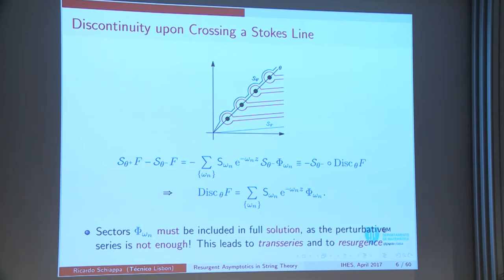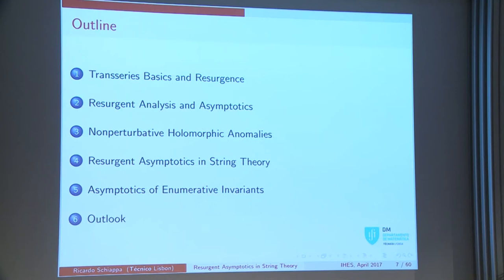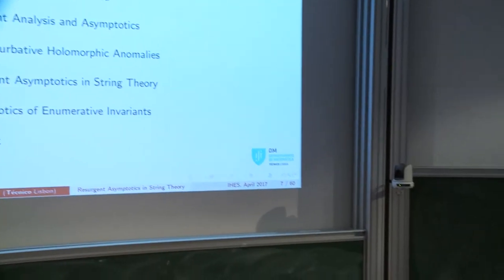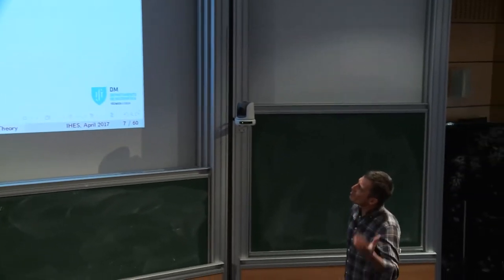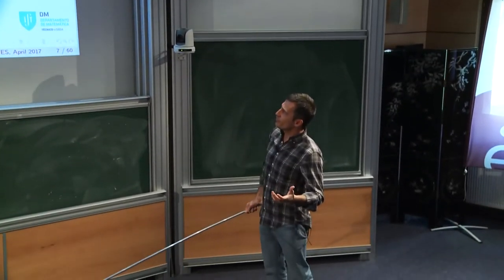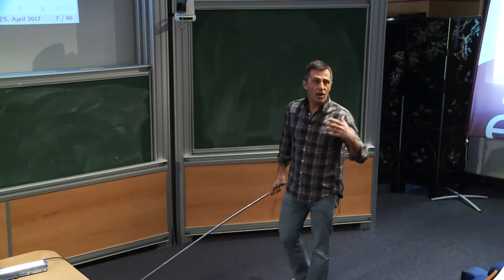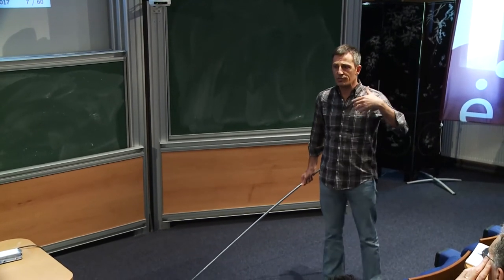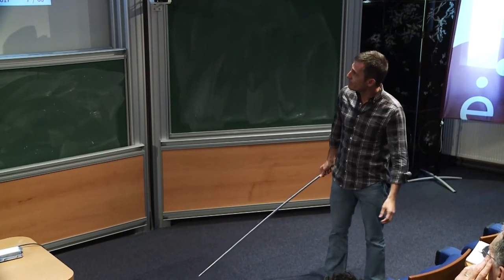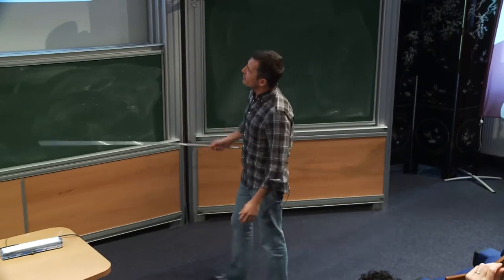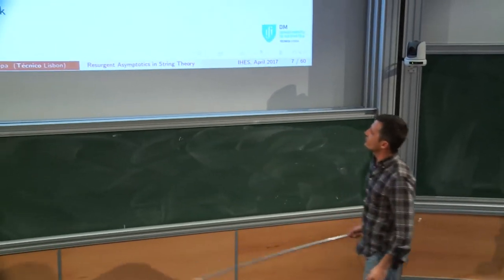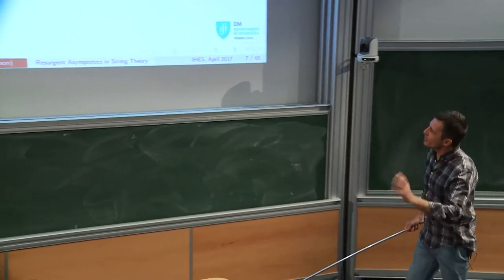That's the basic idea. What kinds of objects are important in resurgence, and how can they allow us to study the asymptotics — to know what's behind that factorial growth? That will be the first half. Then in the second half, we'll discuss how to apply these things in string theory and see how far we can go.